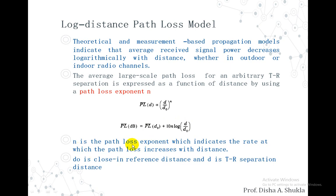N is the path loss exponent — it is the exponent indicating the rate at which the path loss increases logarithmically with distance. D0 is the close-in reference distance, and D is the distance between the transmitter and the receiver, i.e., the separation distance.